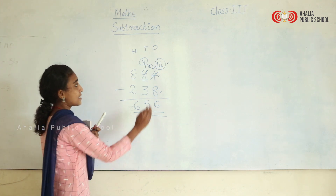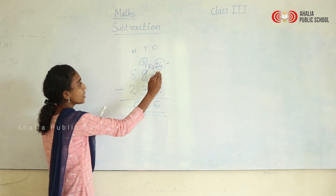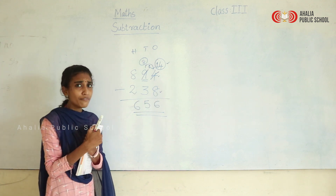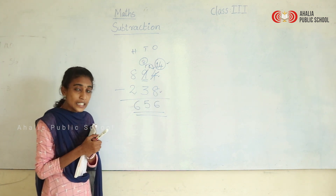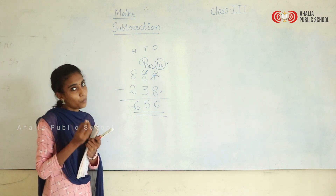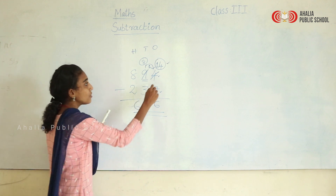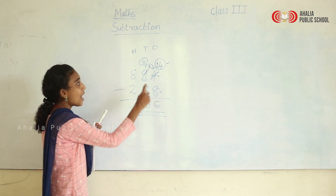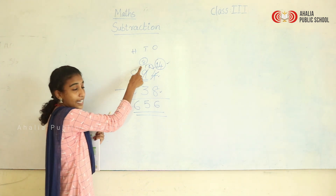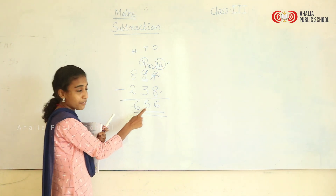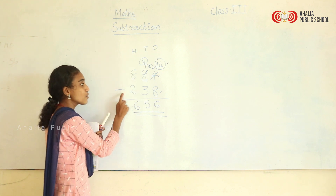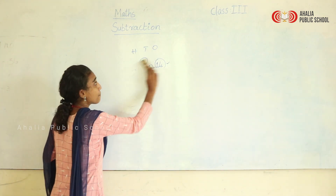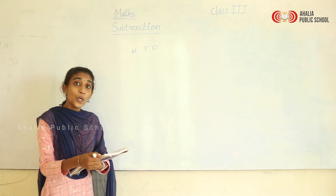So what we have done here: we started subtraction from the ones place. 4 minus 8 was difficult, so we borrowed a 1 from the next place, making this number 14. Then 14 minus 8 gives 6. After giving 1, 9 becomes 8, and 8 minus 3 gives 5. This is subtraction with regrouping.